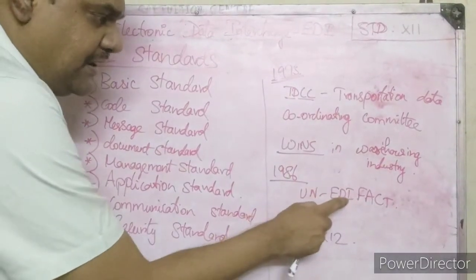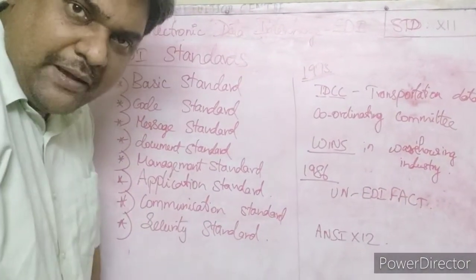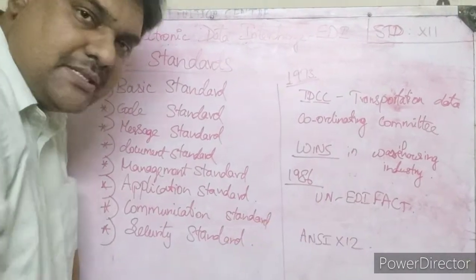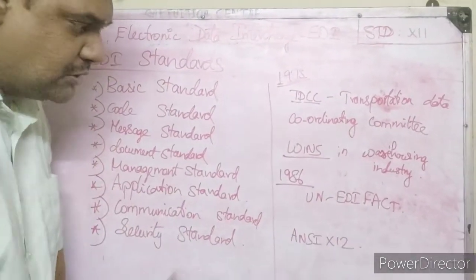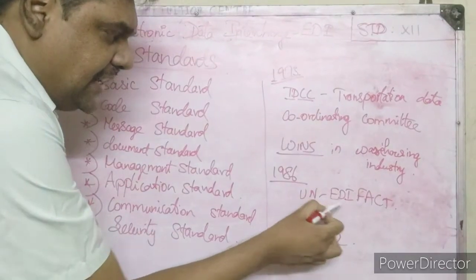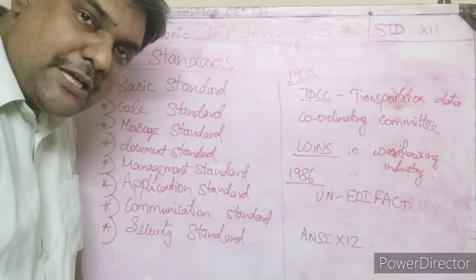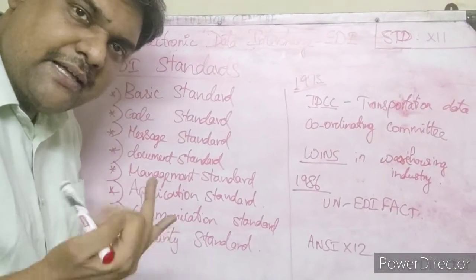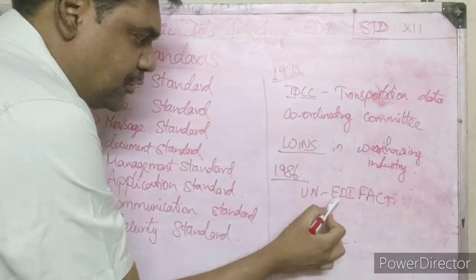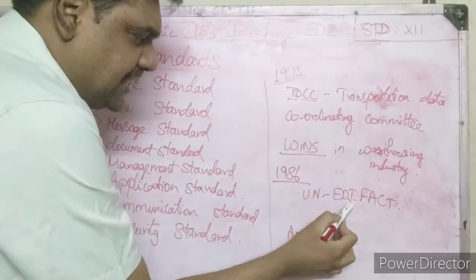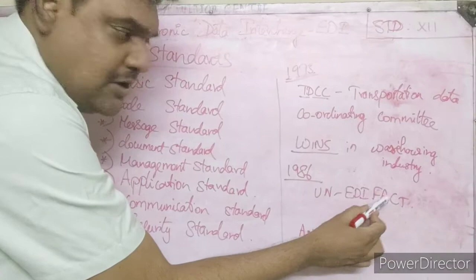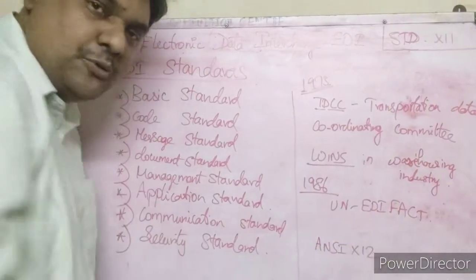That is why in 1986, the United Nations created one common global standard that all countries could accept: UN EDIFACT. EDIFACT stands for Electronic Data Interchange for Administration, Commerce and Transport.